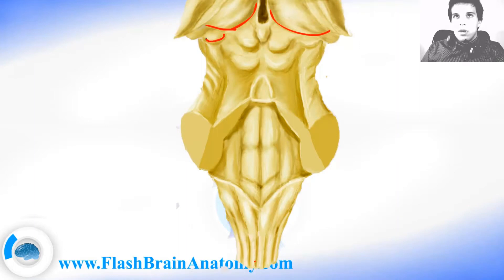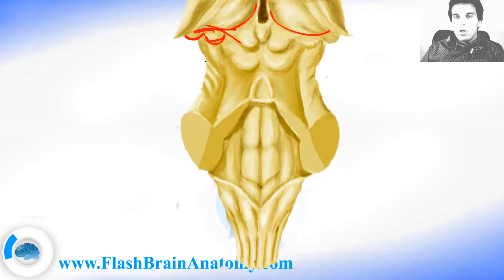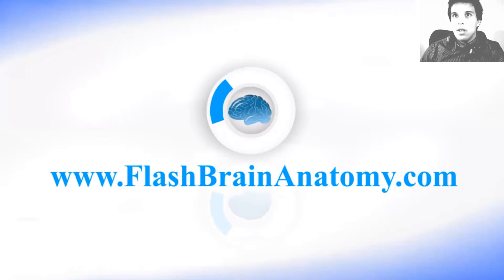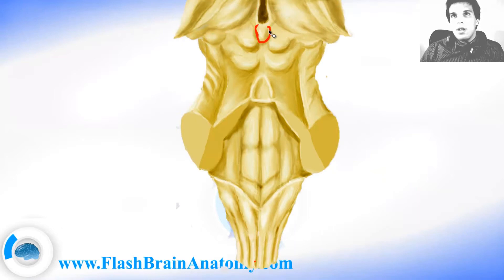This is the medial geniculate body and this is the lateral geniculate body. The superior colliculi connect to the lateral geniculate body, and the inferior colliculi connect to the medial geniculate body. This part here is the pineal gland, which also belongs to the diencephalon — specifically to the epithalamus. So we had the thalamus as one part of the diencephalon, and the epithalamus is another part.